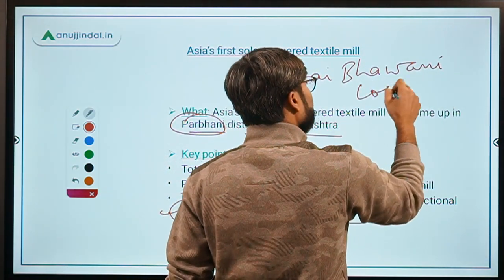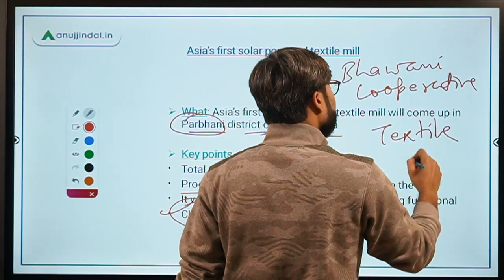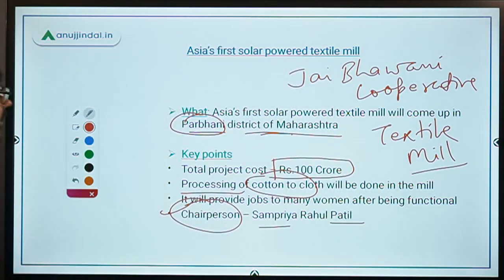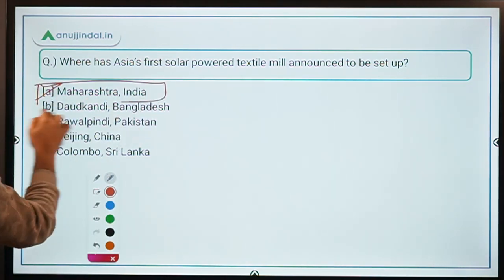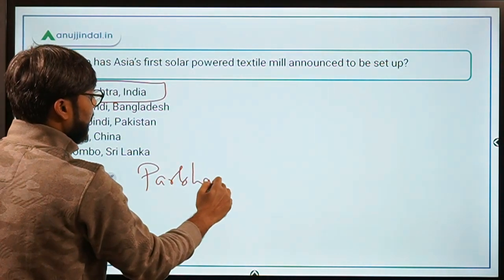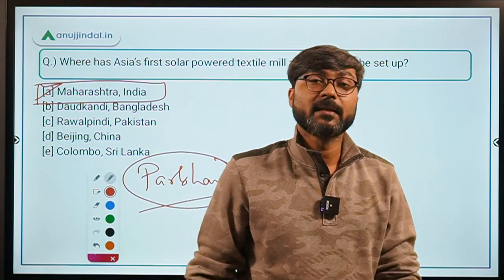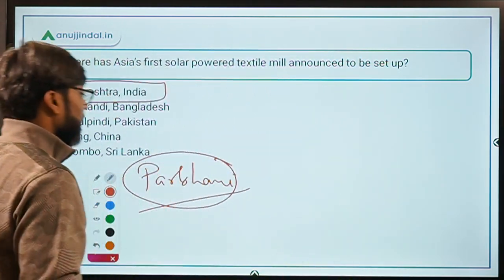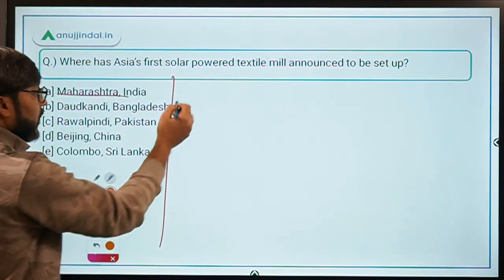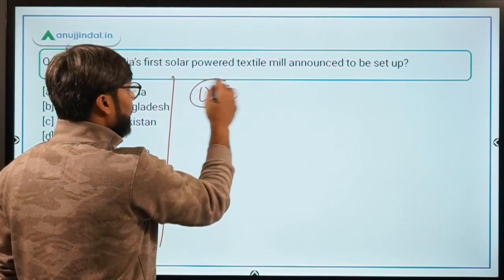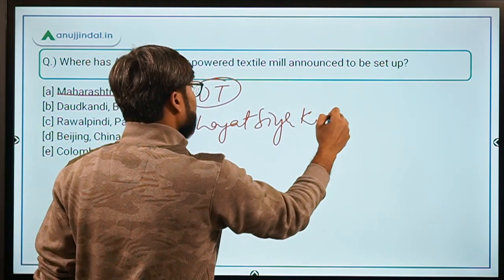Jai Bhavani Co-operative Textile Mill is the name of this mill, located in Parbhani district of Maharashtra. Therefore, Maharashtra is the correct answer. Remember the district name — Parbhani — and the mill name — Jai Bhavani Co-operative Textile Mill — and that the project cost is ₹100 crore. Maharashtra's Chief Minister is Uddhav Thackeray and the Governor is Bhagat Singh Koshyari.